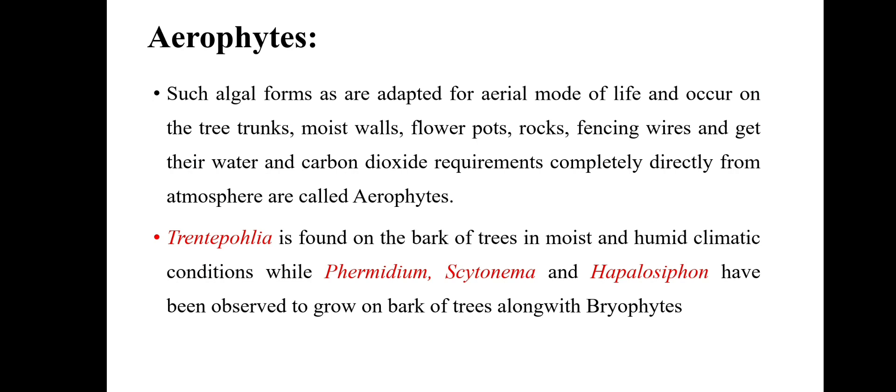Aerophytes — such algal forms are adapted for aerial mode of life and occur on tree trunks, moist walls, flower pots, etc. They get their water and carbon dioxide requirement directly from the atmosphere, so they are known as aerophytes. Example: Trentepohlia, found on the bark of trees in moist and humid climatic conditions. Phormidium, Scytonema, and Hapalosiphon have been observed to grow on bark of trees along with bryophytes.